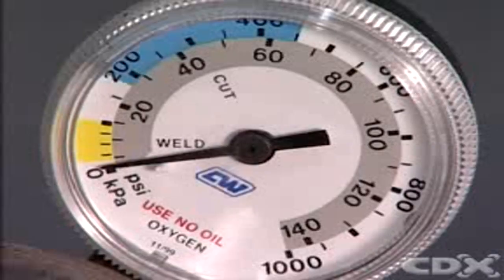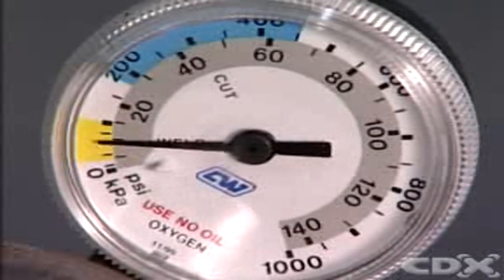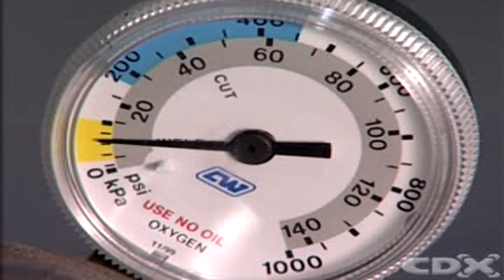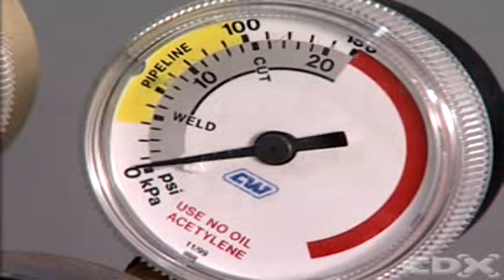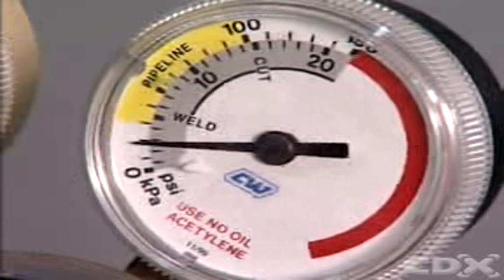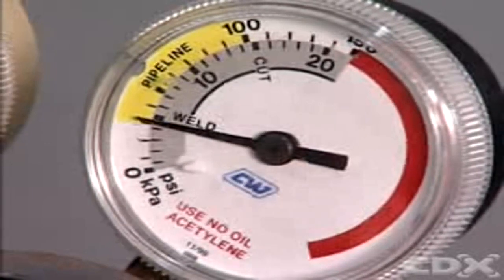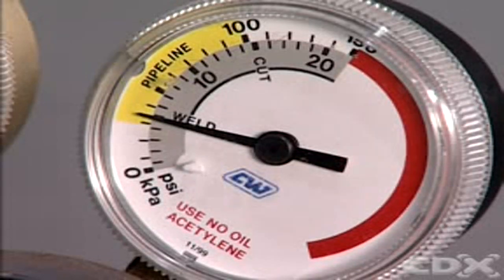Turn the oxygen regulator handle clockwise until the needle in the gauge registers 10 PSI. Turn the acetylene regulator handle clockwise until the needle in the gauge registers 5 PSI. This is your working pressure for heating.